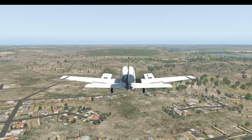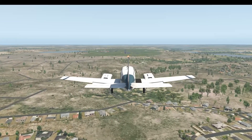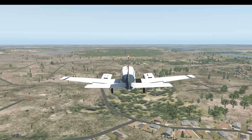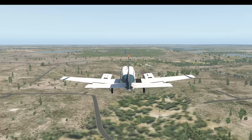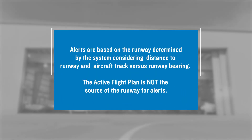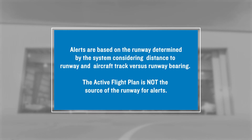Note that the airport and runway that the system bases these alerts on is determined by system logic that considers the distance to the runway and the alignment of the aircraft's track with the runway bearing. This will typically be the same as the airport and runway selected in the flight plan, but the flight plan is not the source the system uses. This means you will get stabilized approach alerts for the runway you were actually set up to land on, and that's a good thing.